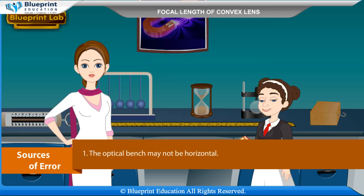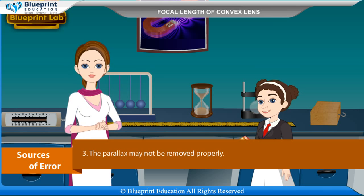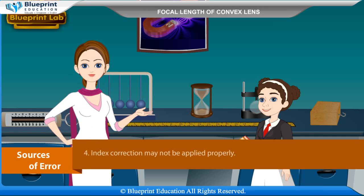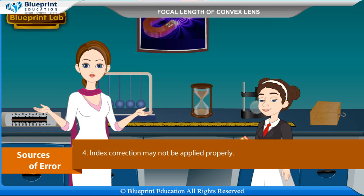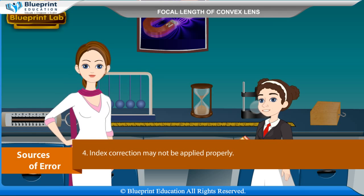Sources of error: The optical bench may not be horizontal. The uprights may not be vertical. The parallax may not be removed properly. Index correction may not be applied properly. Thank you, ma'am, for this knowledgeable experiment.